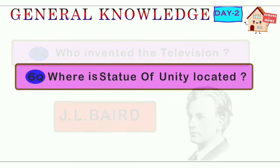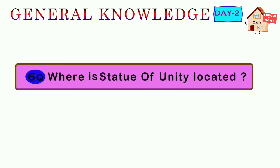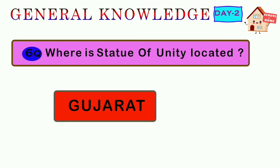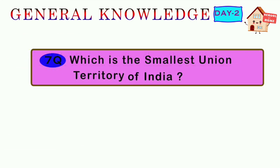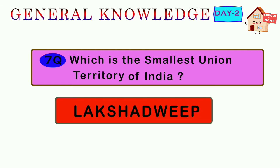Sixth question: where is the Statue of Unity located? Answer: Gujarat. Seventh question: which is the smallest union territory of India? Answer: Lakshadweep.